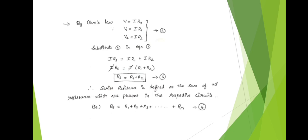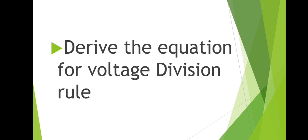This is the equation for series resistance. From Equation 3 we can define series resistance as the sum of all resistances present in the circuit. From the third equation we can conclude: Rs = R1 + R2 + R3 + ... + Rn. This is the equation for series resistance. Next topic: derive the equation for voltage division rule.